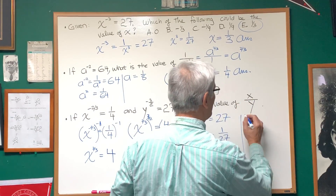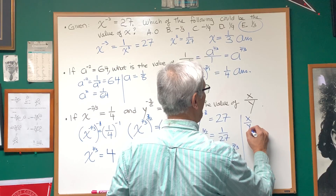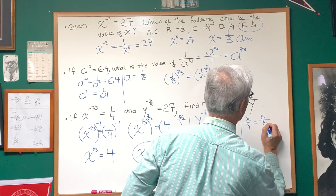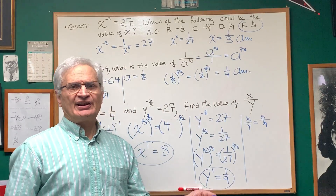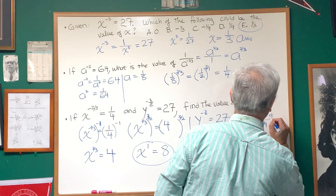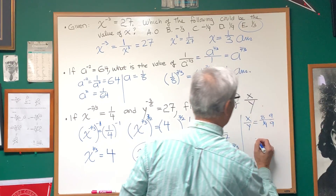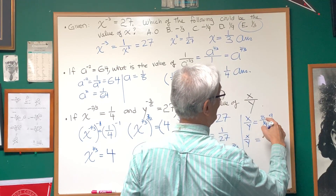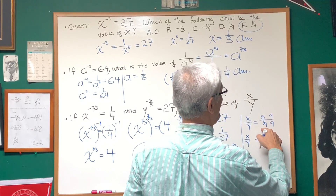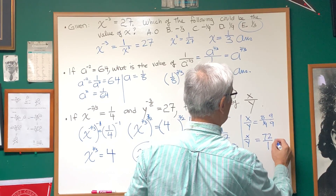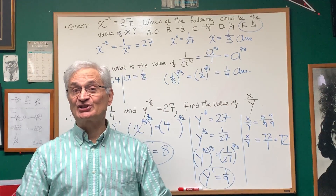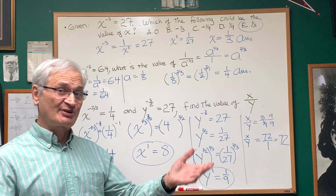So we have X is equal to eight, Y is equal to one ninth. What is the value of X over Y? X over Y is going to be eight divided by one ninth, which is a complex fraction. We multiply numerator and denominator by nine: eight times nine is 72, and one ninth times nine is one. So the answer to the problem is 72. And there are some algebraic exponential problems.